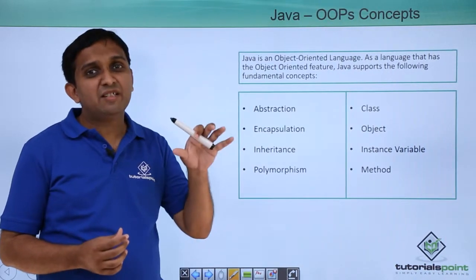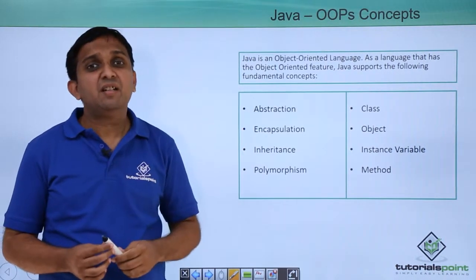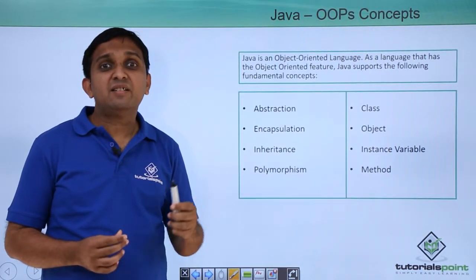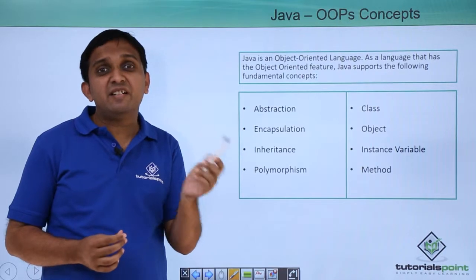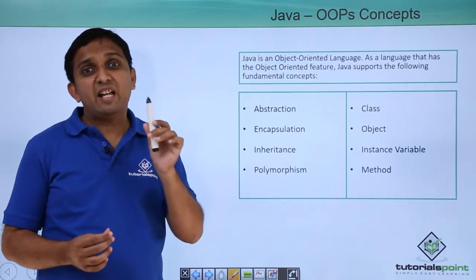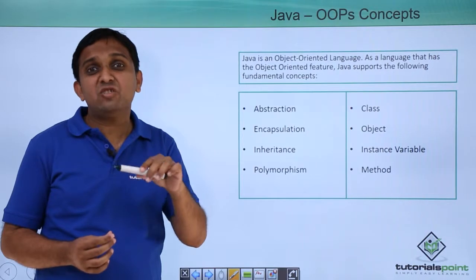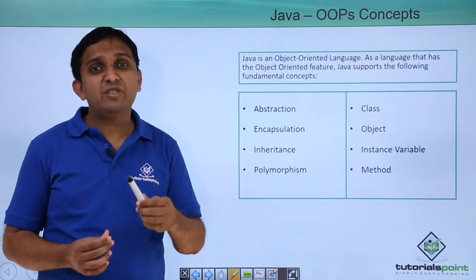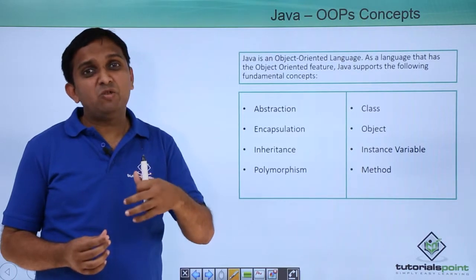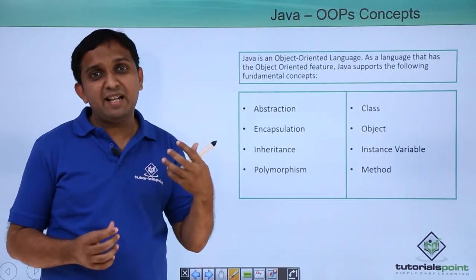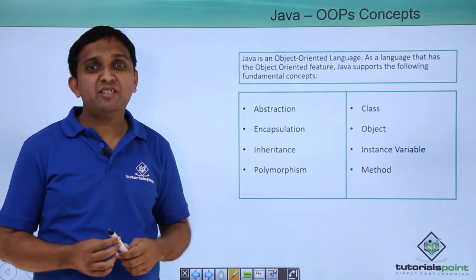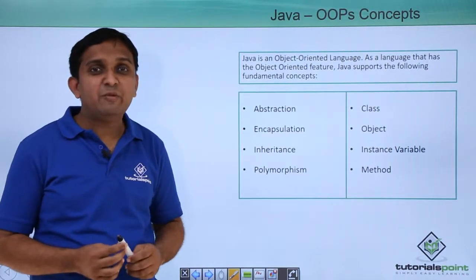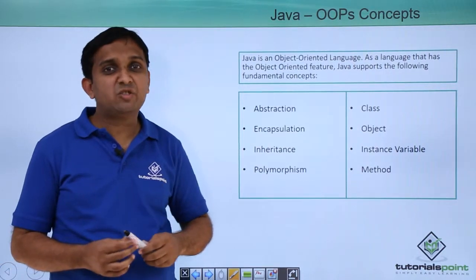It depends on your requirement which attributes you will consider. So if that person is looking for a job and goes to an organization, then that organization is interested in the age, name, and salary, but is not interested in the height and weight of the person — those attributes are neglected. So it depends on the domain which attributes to select and which to reject. That process is called Abstraction.